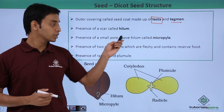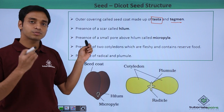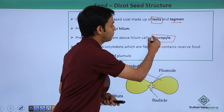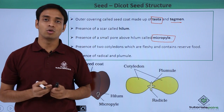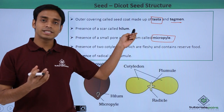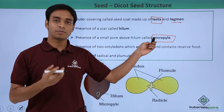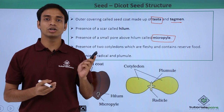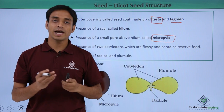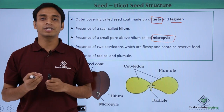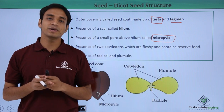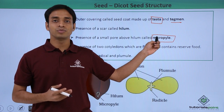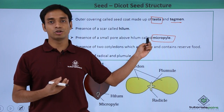There is a presence of a small pore just above the hilum, known as the micropyle. The seeds develop from the ovule, and this pore — the micropyle — is the area from where the pollen tube enters into the ovule. The pollen tube enters and disperses the male gametes into the ovule for the process of fertilization. So the micropyle plays an important role in the entry of the pollen tube, through which the male gametes enter the ovule.